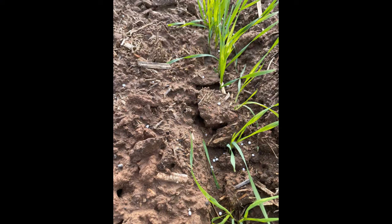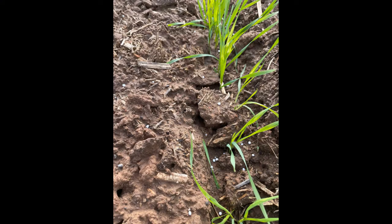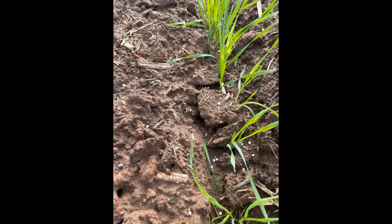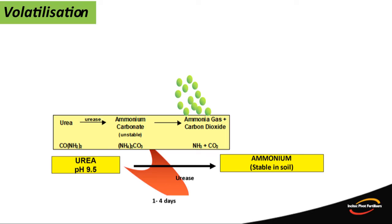What happens to urea when it lands on the soil surface? It rapidly dissolves in the presence of soil or atmospheric moisture and converts to ammonium. This is the stage where volatilization problems occur. Urea may only be present on the soil surface for 24 to 48 hours, as the conversion to ammonium is rapid.